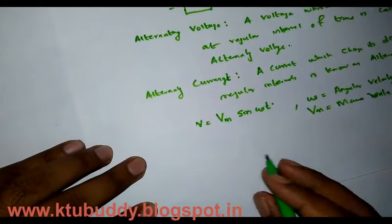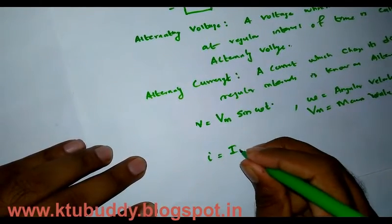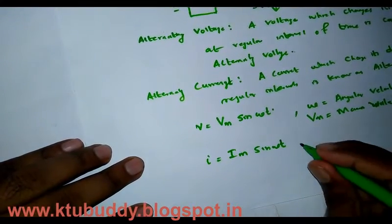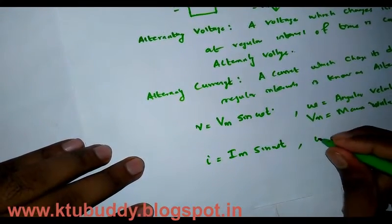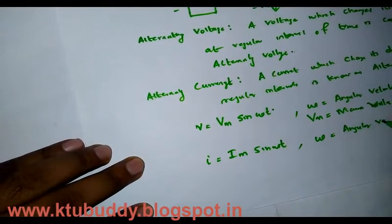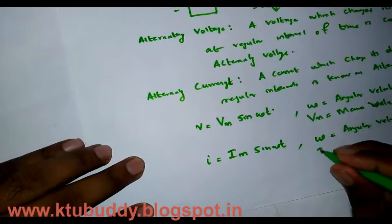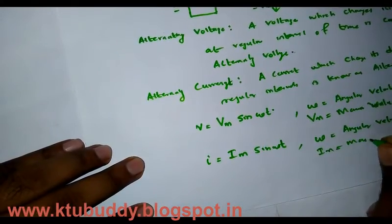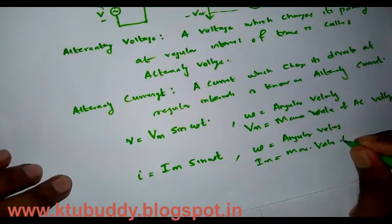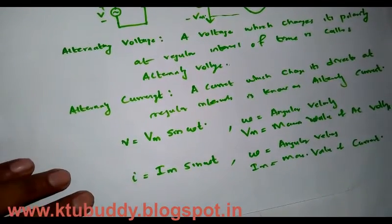Similarly, we can represent the instantaneous value of current as I = Im × sin(ωt), where omega (ω) is the angular velocity and Im is the maximum value of alternating current.